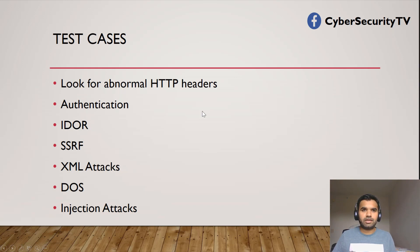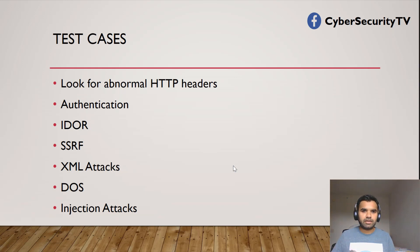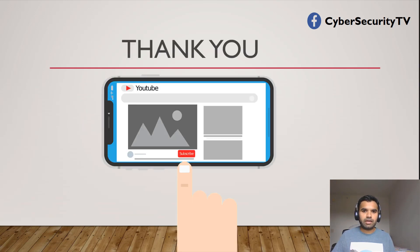Last but not least, injection attacks. We've seen injection attacks all over the place for web, and the same applies to APIs. You want to try SQL injection, XML injection — tricking the interpreter to execute unintended commands without proper authorization. These are some high-level test cases to focus on for API pen testing, and we're going to take each one, look into the details, and I'll demonstrate each vulnerability.